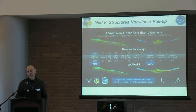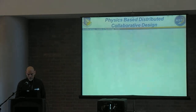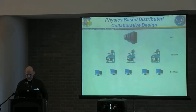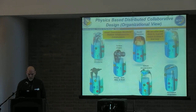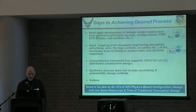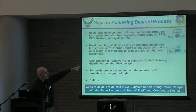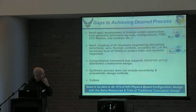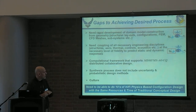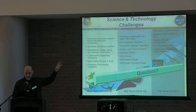Just to tell you where the bottlenecks are — the gaps to achieving this desired process of large-scale multidisciplinary design: we need to be able to develop the models, couple these disciplines, and account for them in physics-based methods. We need a computational framework that supports this — that's the multidisciplinary, multi-fidelity, multiscale analysis and optimization with uncertainty quantification. We want to be able to do all those things in place. We need to put uncertainty and probabilistic design methods in, and really, we need to change the cultures in these communities.